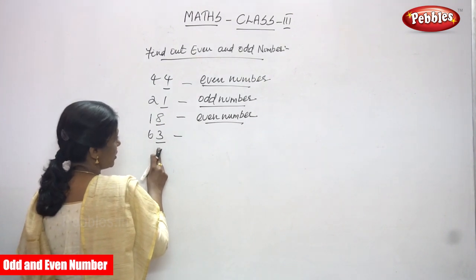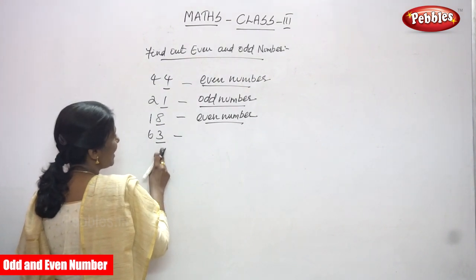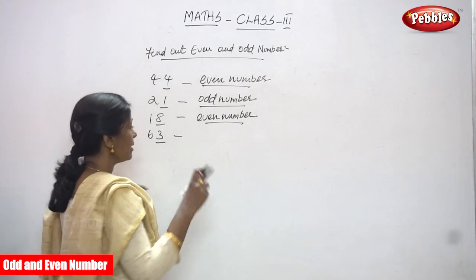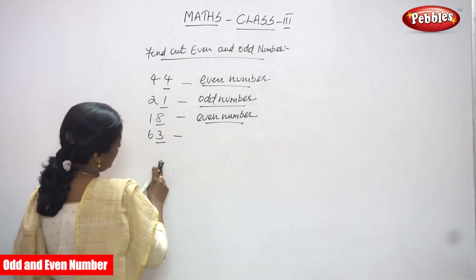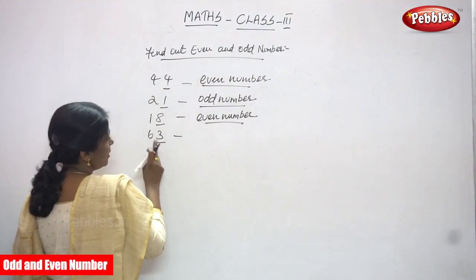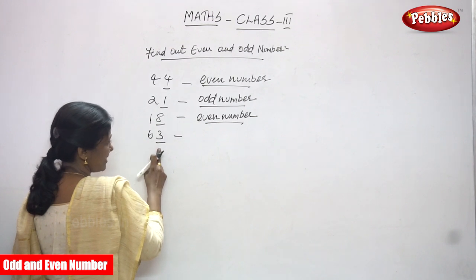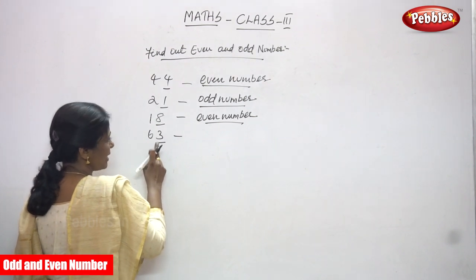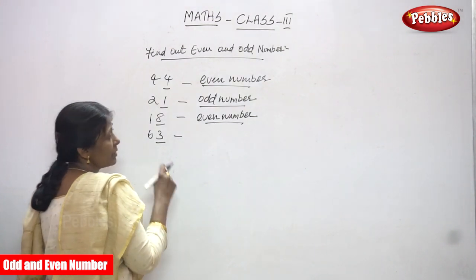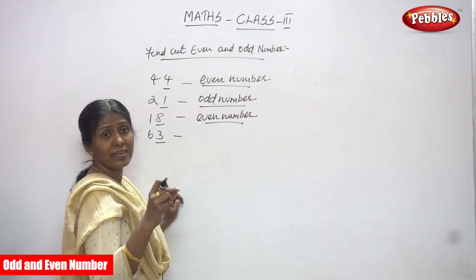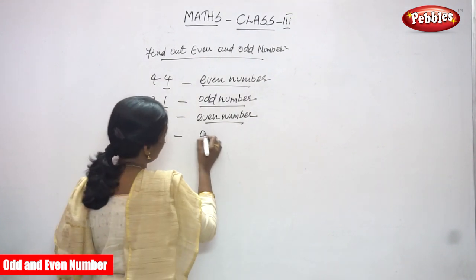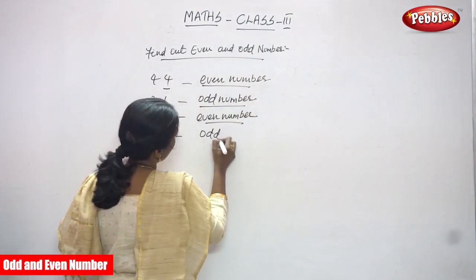When the number ends with 1, 3, 5, 7, or 9, it is an odd number. For example, 63 — look at the ones place, it is 3. So the number ends with 3. If the number ends with 1, 3, 5, 7, or 9, it is an odd number.